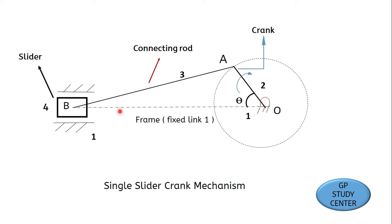Inversion of mechanism means the method of obtaining different mechanisms by fixing different links of a kinematic chain. When we fix different links of the same kinematic chain, we obtain different mechanisms. This process is called inversion of mechanism.